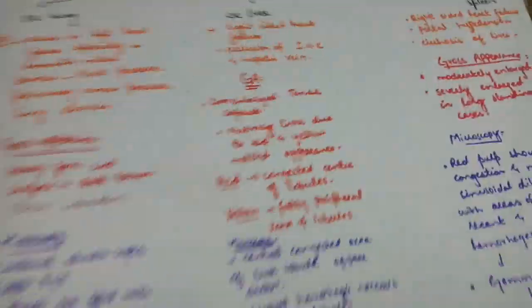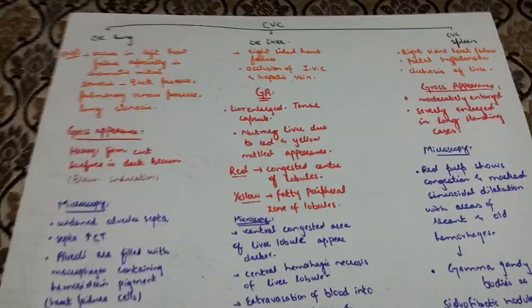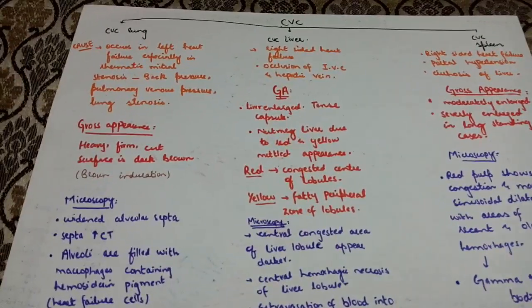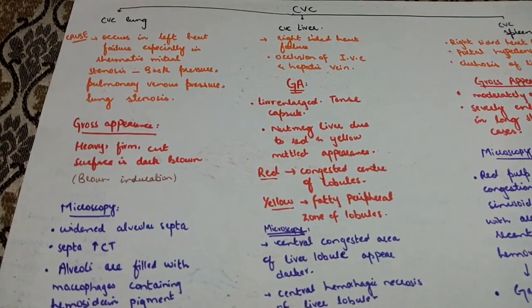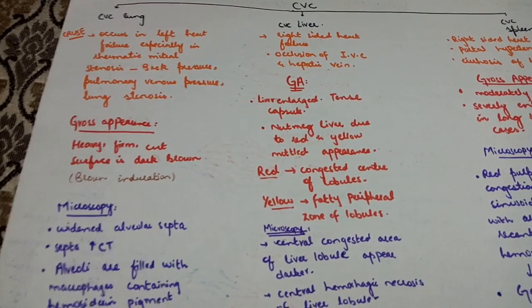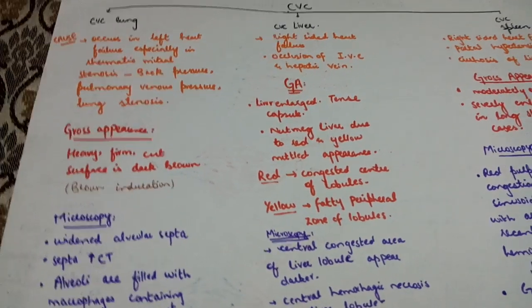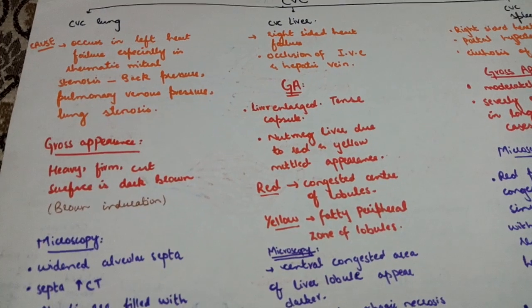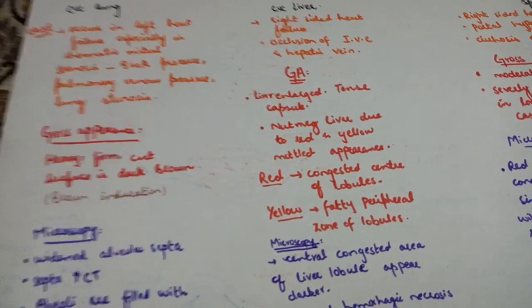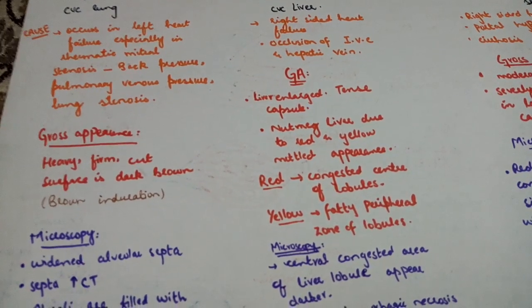Now let's discuss chronic venous congestion of the lung. CVC of the lung occurs in left heart failure, especially in mitral stenosis, as a result of back pressure of pulmonary venous pressure which increases.